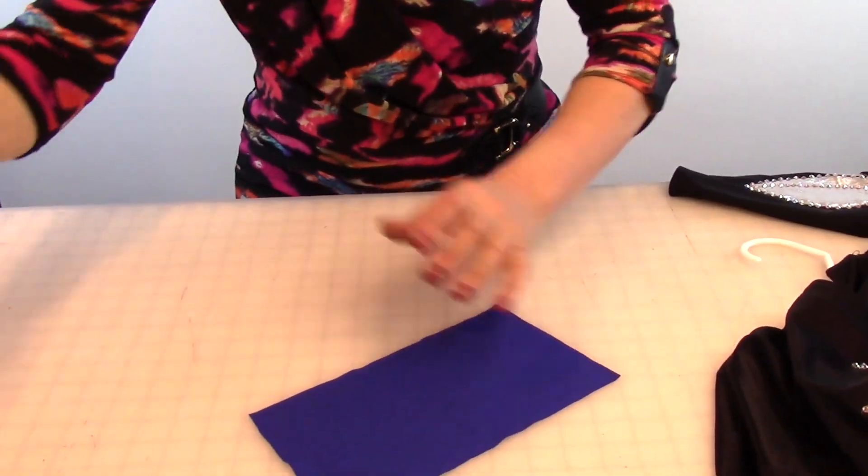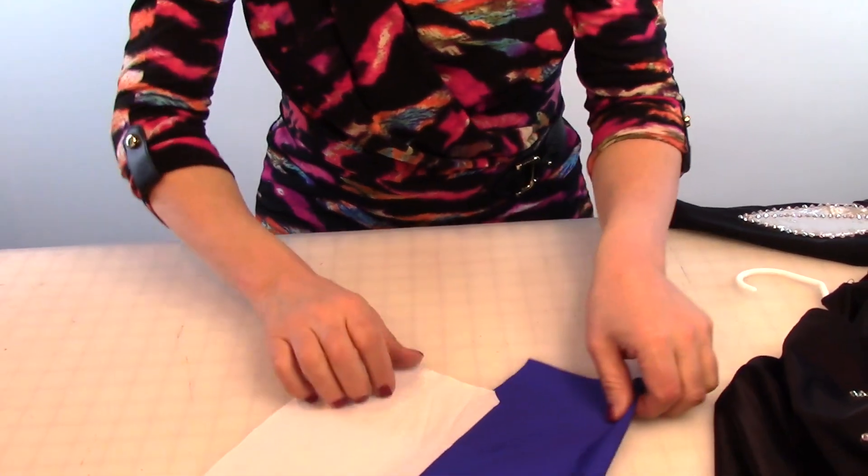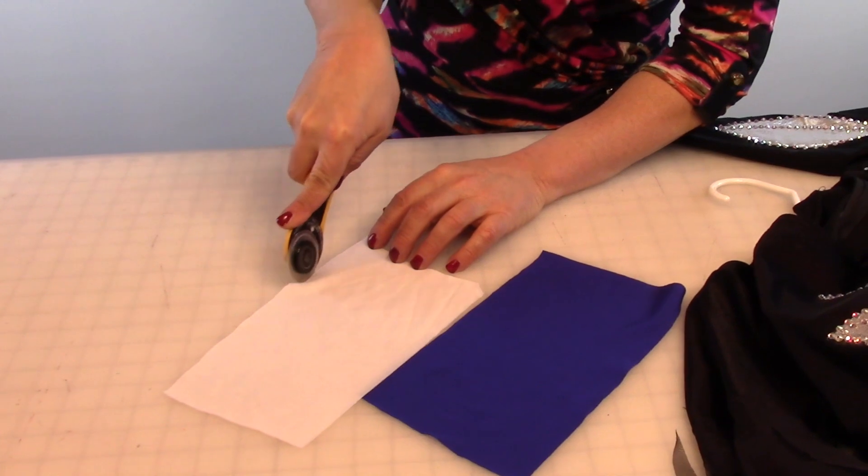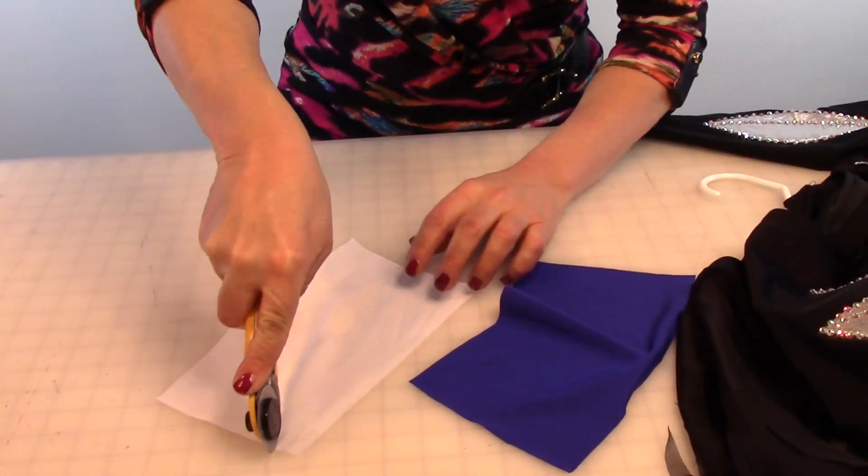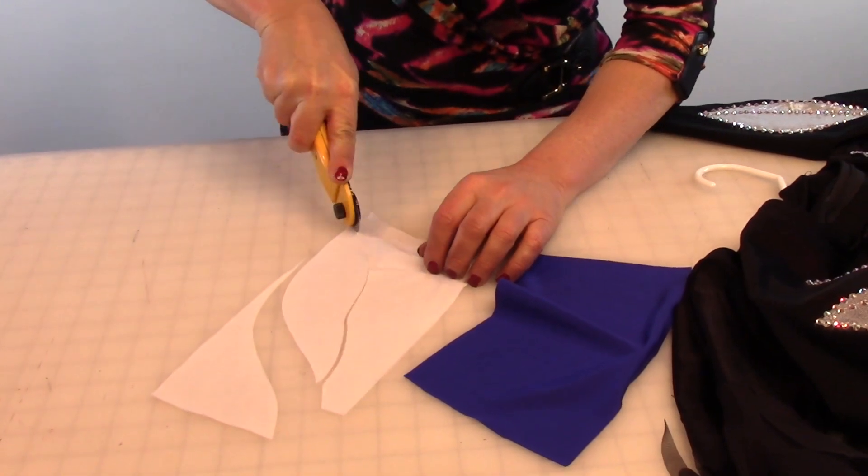So let's pretend you had a blue costume and say you wanted to put something white on top of it. You would just cut out the shape that you want to put on top, like that.